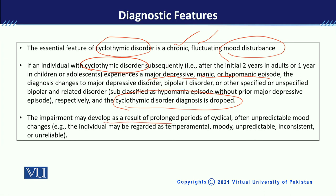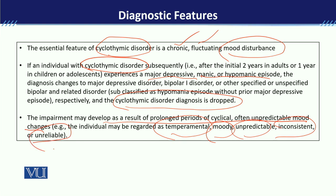जो impairment है वो develop होती है unstable cyclic mood की वजह से। चूंकि इनका mood unpredictable होता है, इस वजह से Cyclothymia में functional impairment ज़्यादा होती है as compared to Bipolar 1 disorder या Bipolar 2 disorder। ये लोग usually temperamental, moody, unpredictable, inconsistent mood के reference में जाने जाते हैं। Mood stable नहीं होता, काम में consistency नहीं होती, इस वजह से इनका functionality level ज़्यादा affect होता है। ये वो features हैं जिनका ध्यान रखना है जब Cyclothymia disorder diagnose करें।